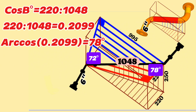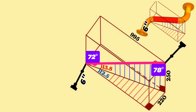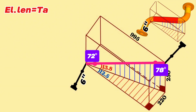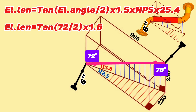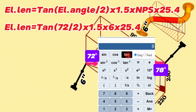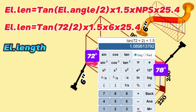Now let's calculate the dimensions of these elbows from the center to the end. The formula for calculating the center-to-end distance of cut elbows is as follows: Elbow length equals tangent of (elbow degree divided by 2), multiplied by 1.5, multiplied by nominal pipe size (NPS), multiplied by 25.4. For this formula, the 6 inch 72 degree butt weld elbow length equals tangent(72/2) × 1.5 × 6 × 25.4. Using a scientific calculator, the 6 inch 72 degree butt weld elbow length equals 166 millimeters.